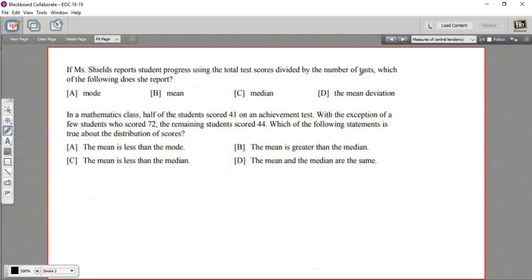Let's look at a couple more. This next problem says, if Ms. Shields reports student progress using the total test scores divided by the number of tests, which of the following does she report? You should know that of these three measures of central tendency, the mean, the median, and the mode, it's only the mean that uses division. You add everything up and then you divide by the number of data points. The median is just plucking out a value from the middle. The mode is looking for a value that occurs the most often. So since we're talking about adding things up and dividing here, we're talking about mean.